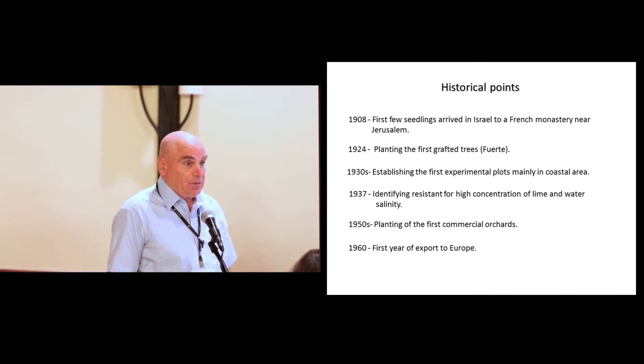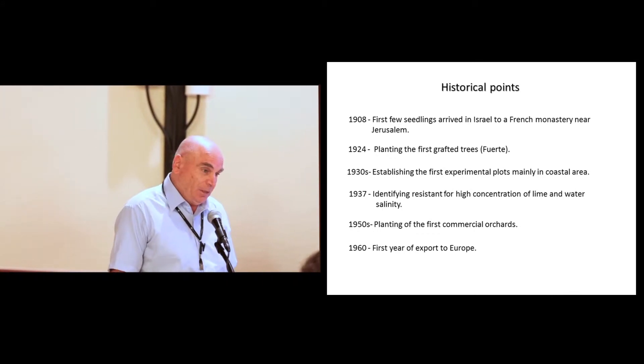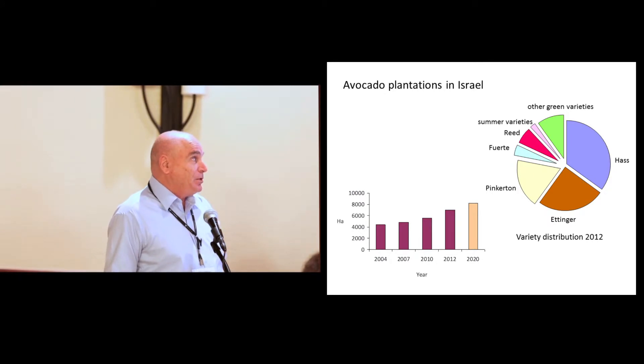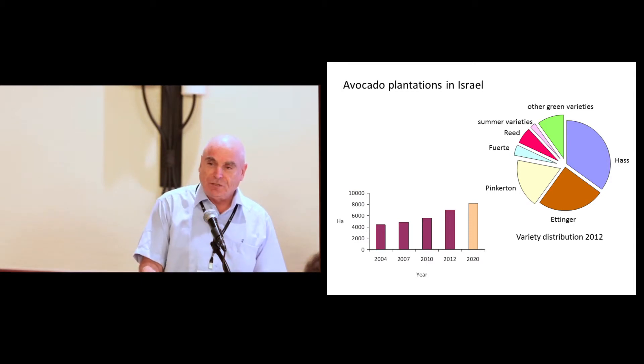Actually, about 60% of the avocado production is being sent to Europe. Here you see some information about the avocado plantation in Israel. We cultivate several varieties. The main one is Hass, and the proportion of Hass is increasing by year. Here you can see the changes in the avocado area in the country. Avocado is still being planted. Although some growers have second thoughts about whether to plant more land with avocado, eventually the planting of new avocado is going on.